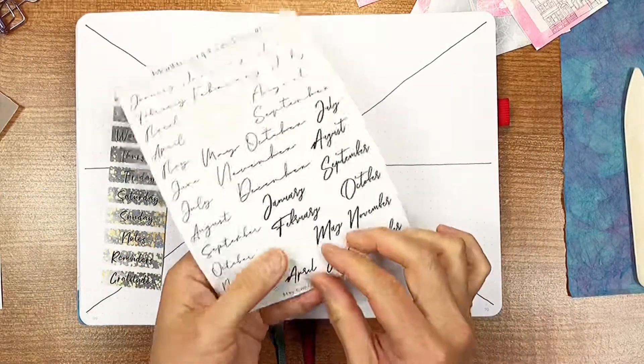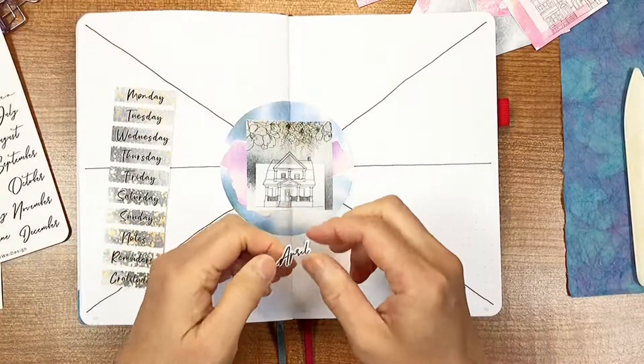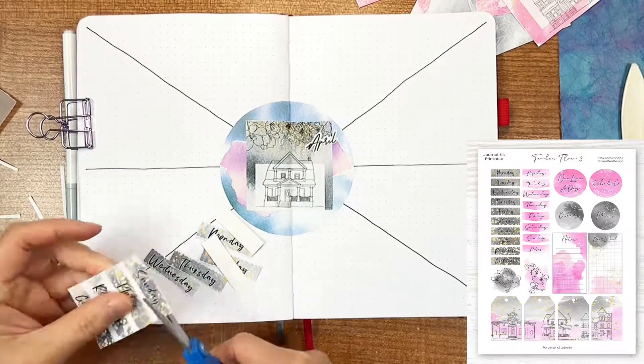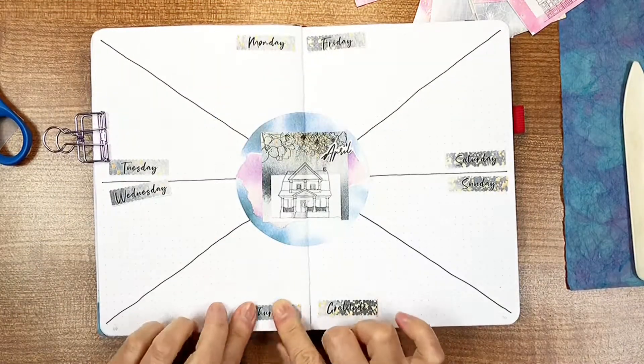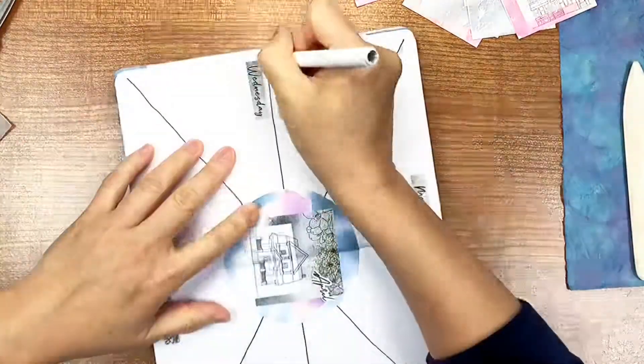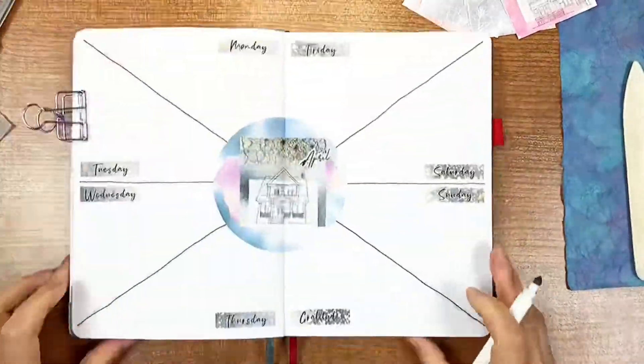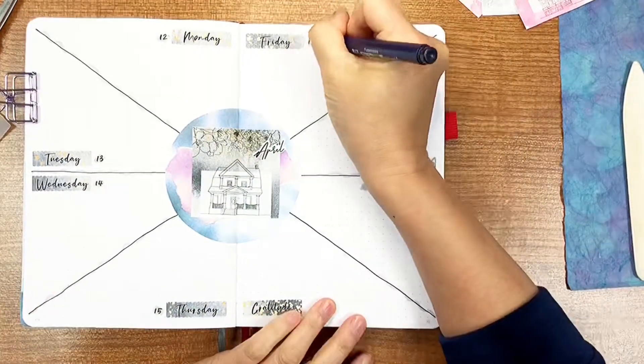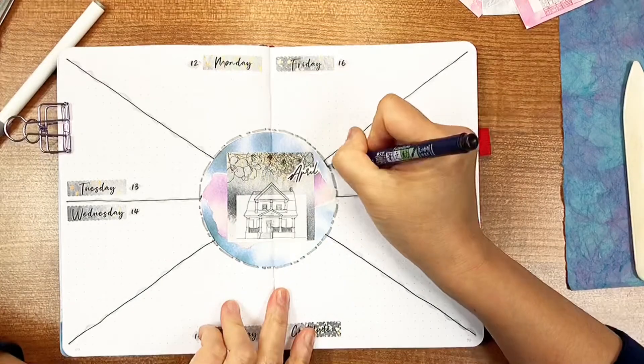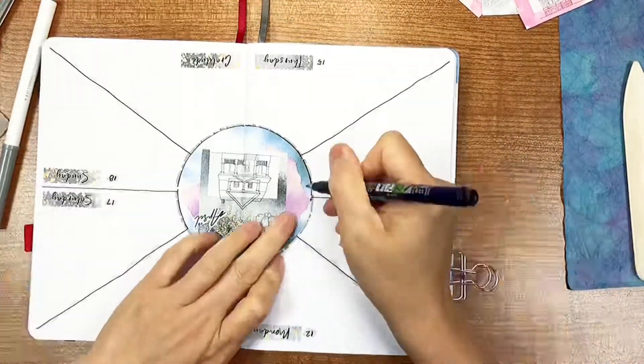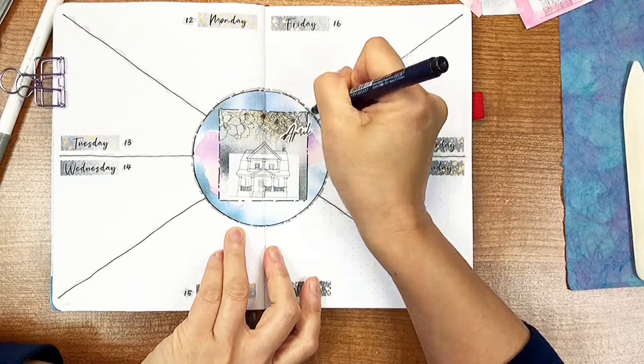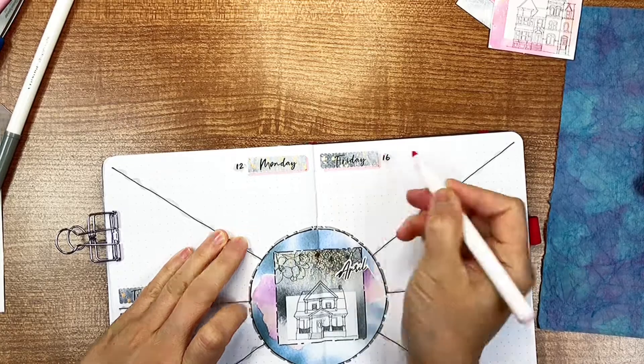Adding the April title sticker. Then, cutting the weekday stickers from the printable and placing them in each box. Drawing some decorative broken lines around the circle. And finally, drawing some pink drop shadows to add some colors to the page.